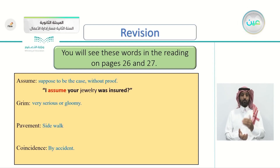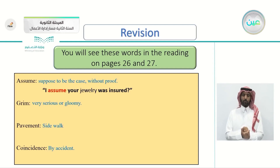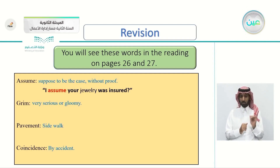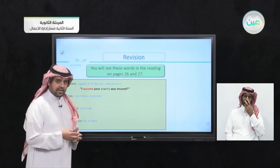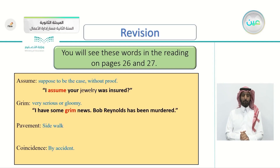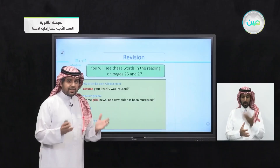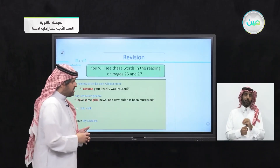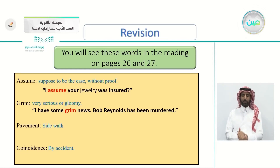We will see the word 'assume' in the article in this sentence: 'I assume your jewelry was insured.' The second word is 'grim' — it means very serious or gloomy; you can say sad or dark. We will see it in this sentence: 'I have some grim news.' Grim here is an adjective describing the news as gloomy or serious — 'Bob Reynolds has been murdered' — so now we know why the news is grim.